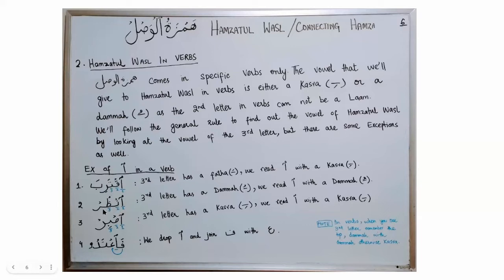If the second letter is not Laam, move on to the third letter. If the third letter has Dhamma, Hamzat al-Wassl will have Dhamma — Dhamma with Dhamma, otherwise Kasra. If the third letter has Kasra, recite Hamzat al-Wassl with Kasra and say Iqasbir. In another situation, you drop Hamzat al-Wassl because you join Fa with Ayn — you say Fa'atadu, simply dropping Hamzat al-Wassl and joining Fa with Ayn.